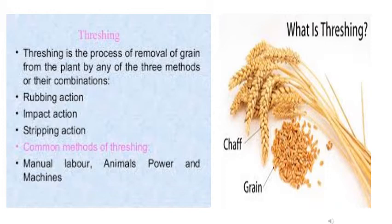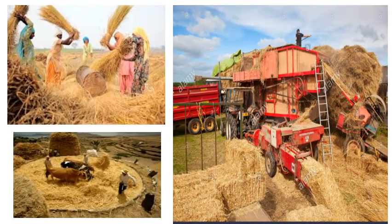Animals and machines are also used in the process of threshing. In the next picture you can see different methods of threshing. In the first picture, women are bundling the crops and hitting them on a hard surface so the grains get separated from the chaff. In the second picture, animals are used — as the animals walk on the crops, heavier grains get separated. The third picture shows a machine used for threshing, which is less time-consuming.